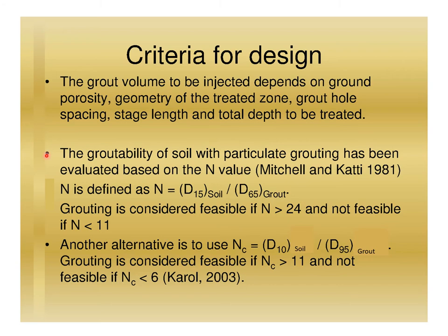N is defined as N = D15 of soil divided by D65 of grout. Grouting is considered feasible if N is greater than 24, and not feasible if N is less than 11.